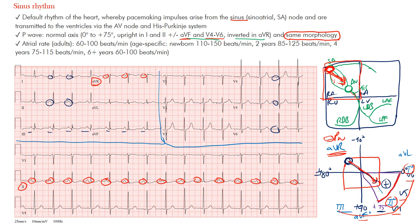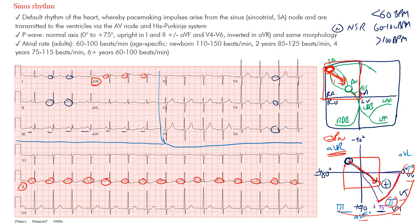Let's look at how we find the rate. In adults: less than 60 beats per minute is sinus bradycardia; 60 to 100 beats per minute is normal sinus rhythm; over 100 beats per minute is sinus tachycardia. We say the range is 60 to 100 because that's the intrinsic rate of the sinoatrial node — the sinus node.